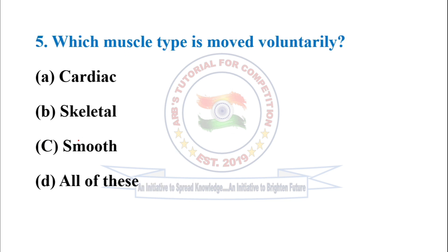Next question: which muscle type is moved voluntarily? The correct option is skeletal. Skeletal muscle is attached to the bone and moves bones by contracting and relaxing in response to voluntary messages from the nervous system. So the correct option is option B — skeletal.